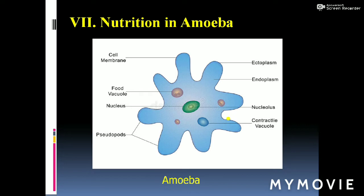First, let's look at the structure of amoeba. Amoeba is a unicellular animal. You can see here the outer growths known as pseudopodia. The central part indicated here is the nucleus. This is the food vacuole, and the outer membrane surrounding the whole body is the cell membrane. This is the contractile vacuole.